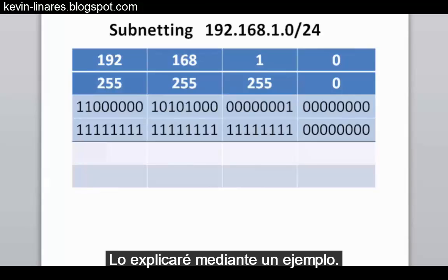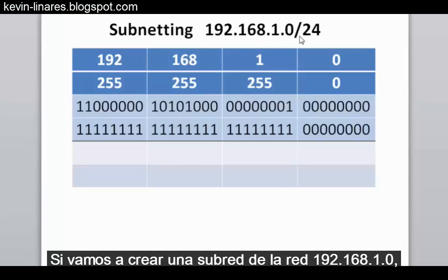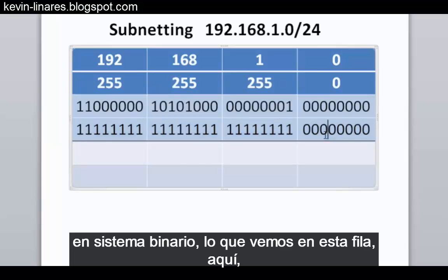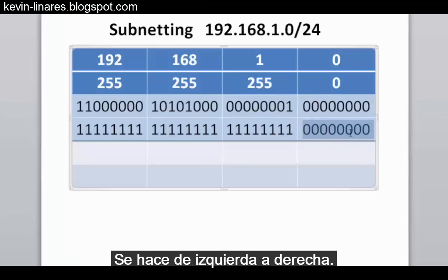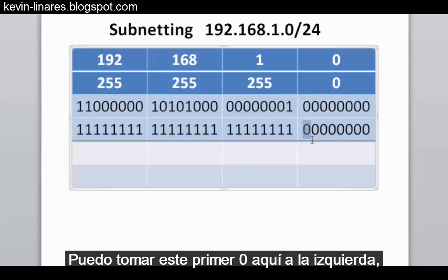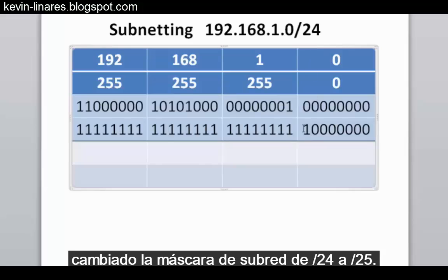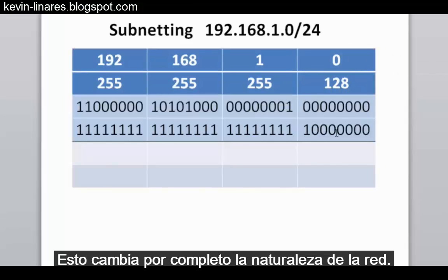I'll explain it using an example scenario. Starting with a classic class C network like 192.168.1.0 with a slash 24 or 255.255.255.0 subnet mask — if we want to subnet this network, we go into the subnet mask in binary and borrow bits from the host portion of the address, from left to right. Taking the first zero and changing it to a one changes the subnet mask from slash 24 to slash 25, or 255.255.255.128 in decimal. This completely changes the nature of the network.